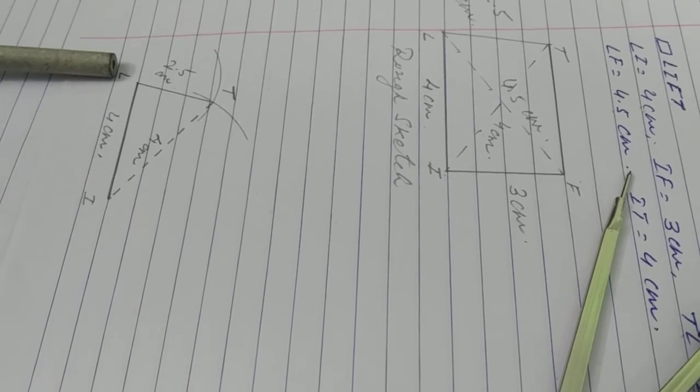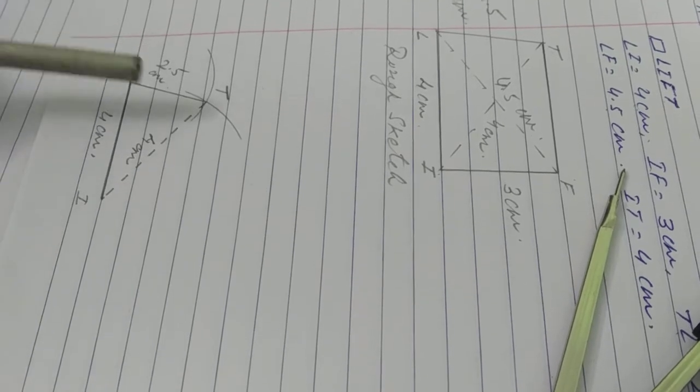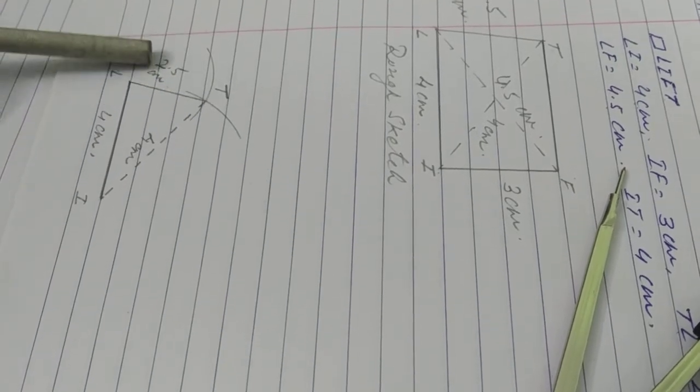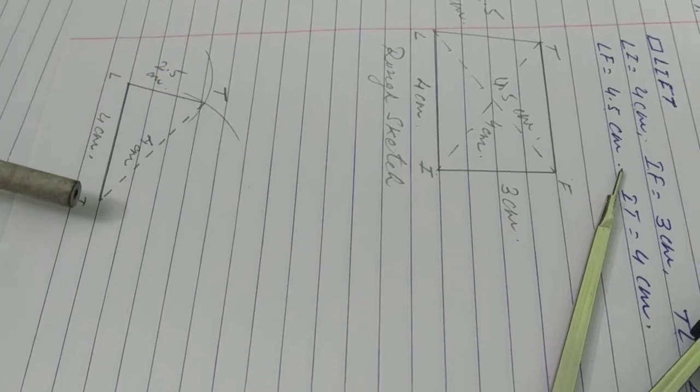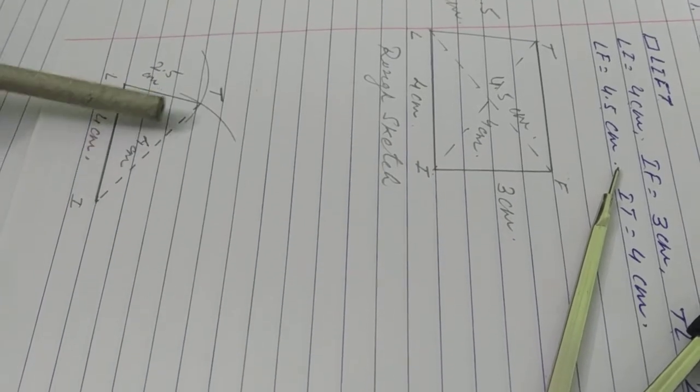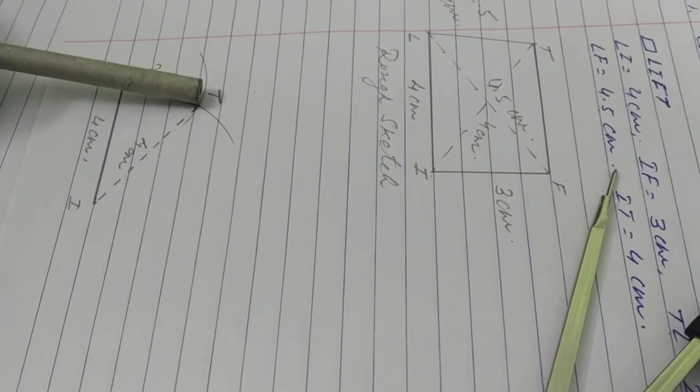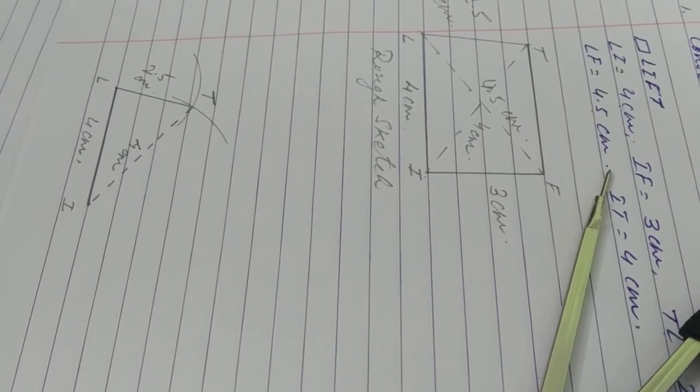Very first draw a line segment LI with 4 centimeter. Second, with L as a center, draw an arc with radius 2.5 centimeter. Third, select point I and draw an arc with radius 4 centimeter. When both are intercept, give point T.